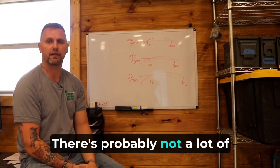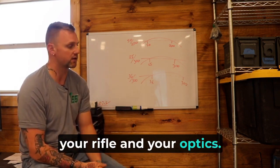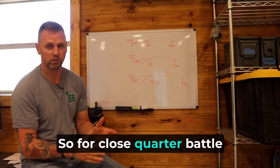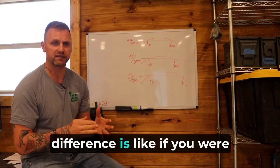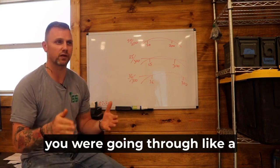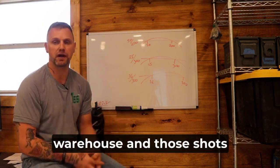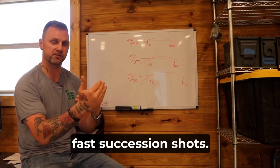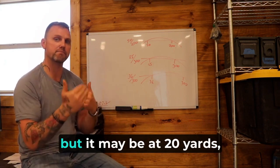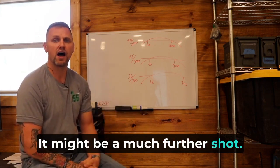For close quarter battle, you're probably not going to see a lot of difference where you will see the difference is like, if you were going to be going through, let's say you were going through like a big warehouse or whatever, like you're law enforcement, you're a SWAT team, whatever you're going through a big warehouse. And those shots that you make are still very rapid, fast succession shots. But it may be at 20 yards, right? It might be a much further shot.